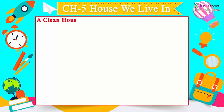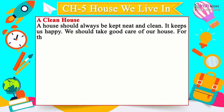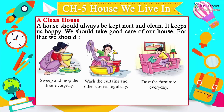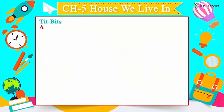A clean house. A house should always be kept neat and clean. It keeps us happy. We should take good care of a house. For that, we should sweep and mop the floor every day, wash the curtains and other covers regularly, dust the furniture every day, use wire mesh to keep flies and mosquitoes away, clear cobwebs regularly, and grow green and potted plants around the house. A clean and airy house is good for health.